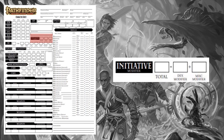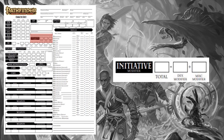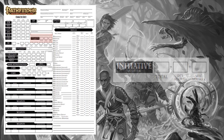Next, initiative. This is the bonus added to your roll to determine your place in the combat turn order. To determine your initiative, you add your Dexterity modifier to your d20 roll. Certain abilities, like the inquisitor's cunning initiative, can give further bonuses to your initiative roll.